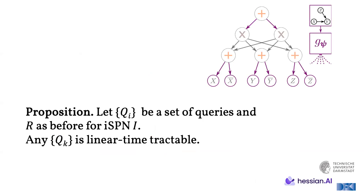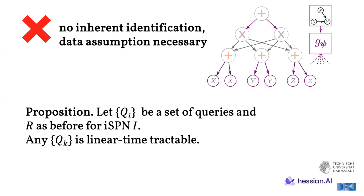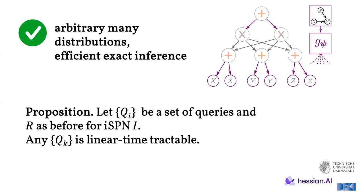So, jumping now again to the topic of this section, which is the coverage of inference and the tractability. So, here we have our proposition that if we have a set of queries QI, then R is before for some ISPN now, so for some interventional SPN, then any QK is actually linear time tractable here. Most importantly here to answer is that actually there's no inherent identification and data assumptions are actually necessary for this model. At first, this seemed very powerful, but this is really a sobering assumption that has to be placed on the ISPN. However, there can be arbitrary many distributions with exact and efficient inference, essentially, and that's reassuring. So, there's a trade-off essentially that if the data is available, then this is a great model for working with such mixed interventional data.